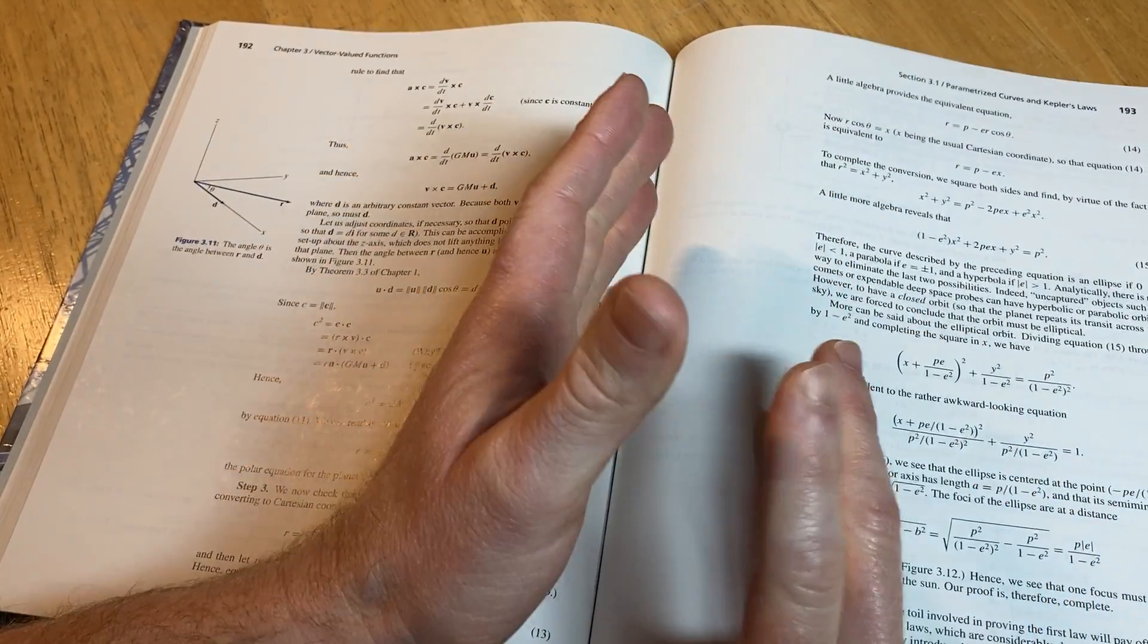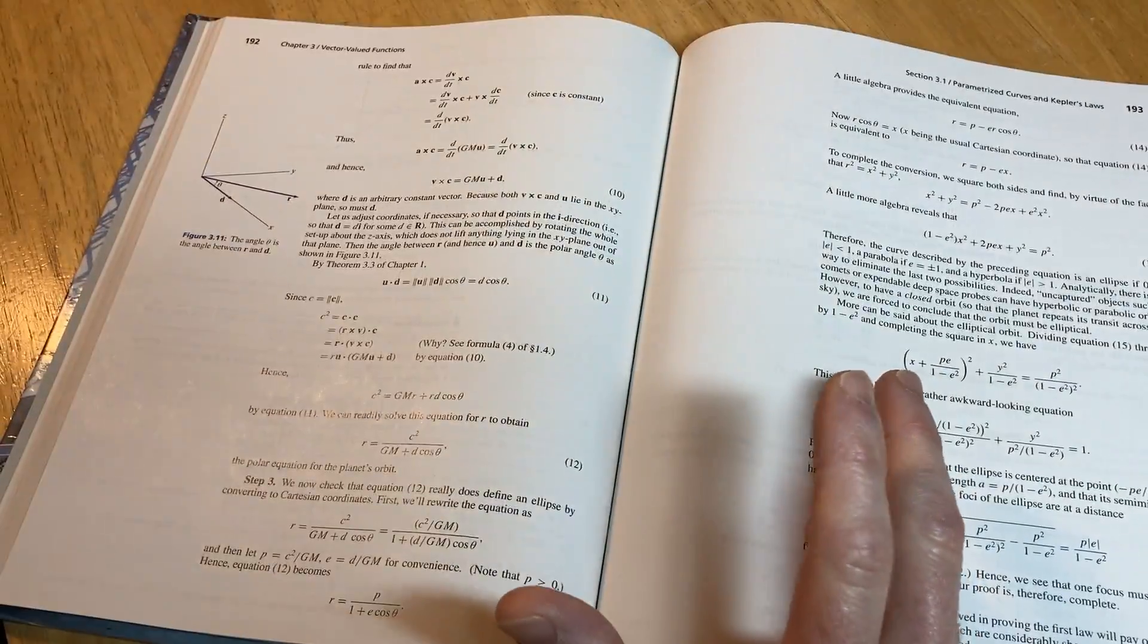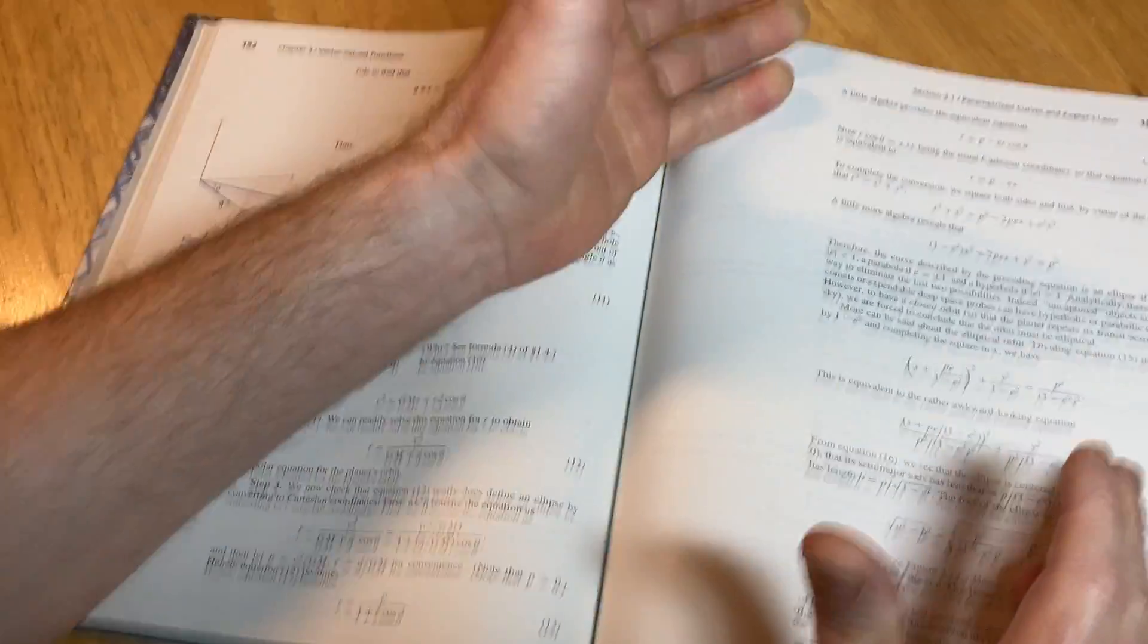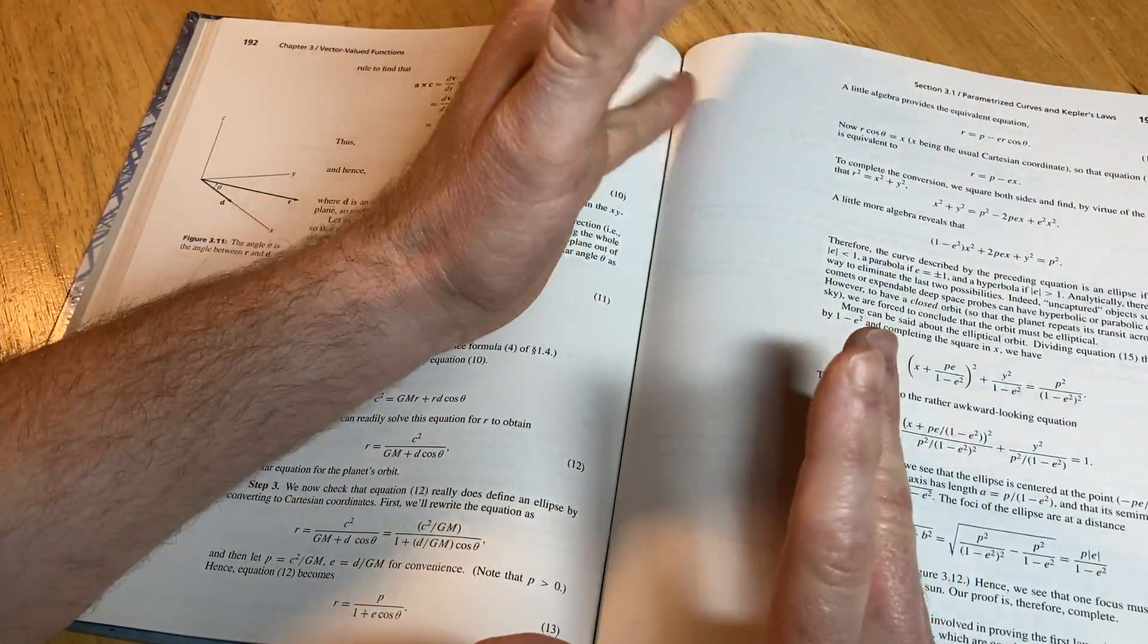So like a student will take Calculus 1, they'll buy the Stewart book, and then they'll be able to use that same book for Calc 2 and Calc 3. So a book like this is probably not so popular because then this requires students to buy another book just for Calc 3.